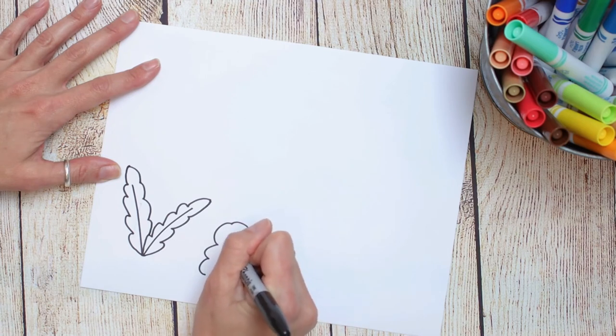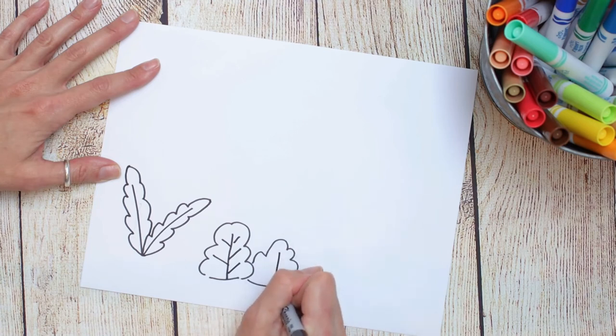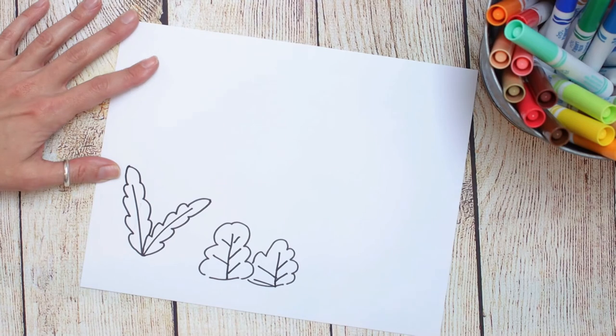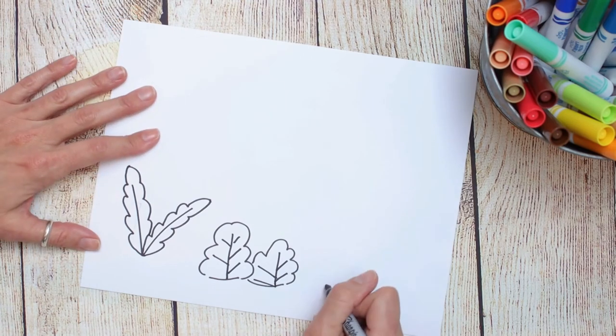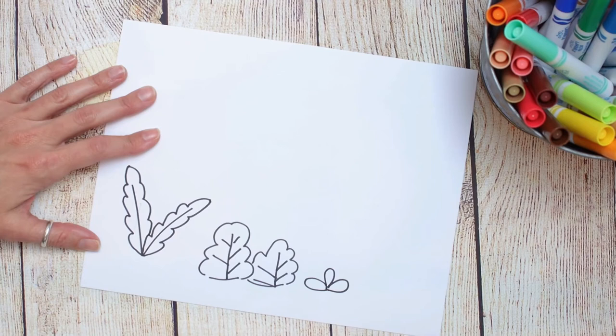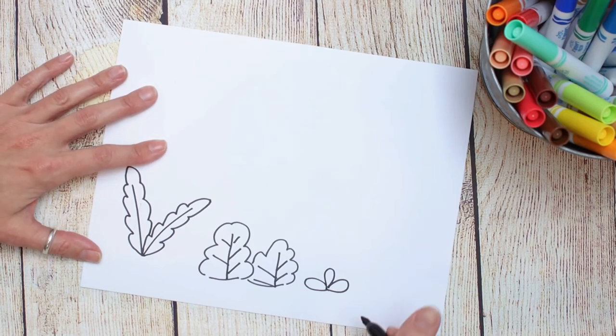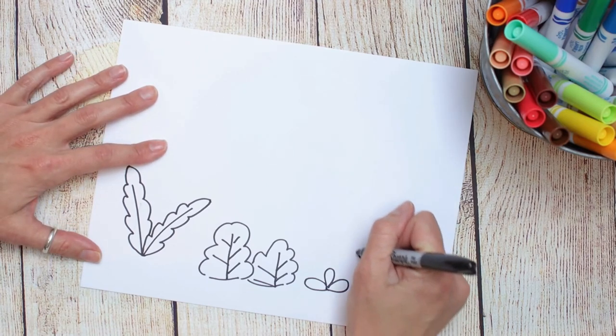And then inside, some really simple straight lines just to kind of give the suggestion of a kind of a tree or a plant kind of growing within that form. Super, super simple.